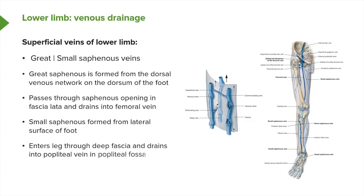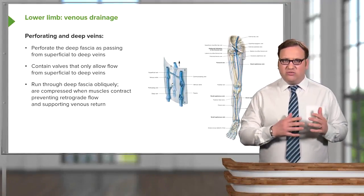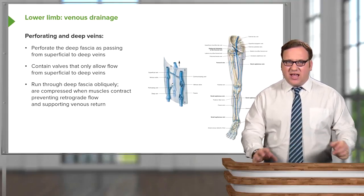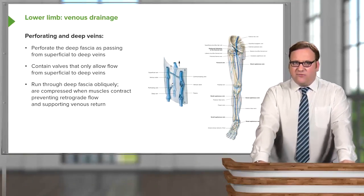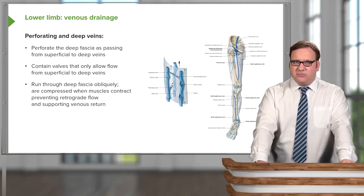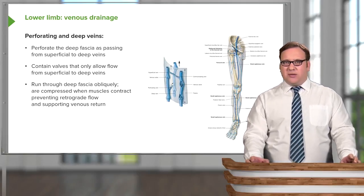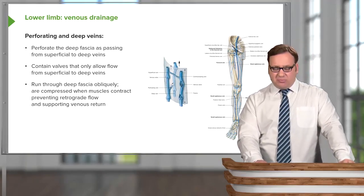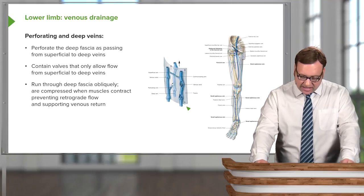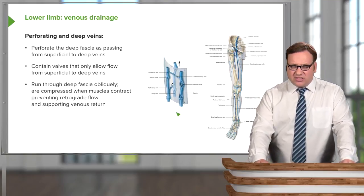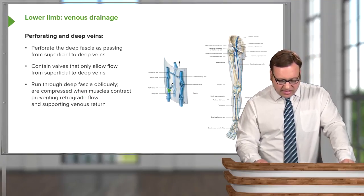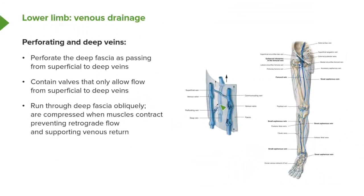The perforating veins pass from the superficial veins through the deep fascia into the deep veins. They contain valves and only allow flow from superficial to deep, so blood can't flow from deep to superficial. This is important because gravity is against venous return — it prevents blood from regurgitating back distally and blood can only be returned to the heart. The perforating veins run obliquely through the deep fascia, and as the muscles contract, they compress them, which also prevents retrograde flow of blood, supporting venous return.